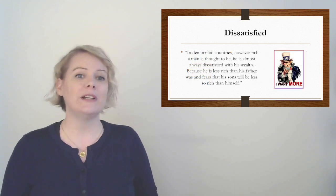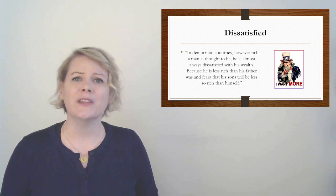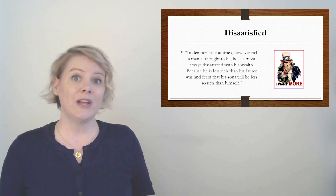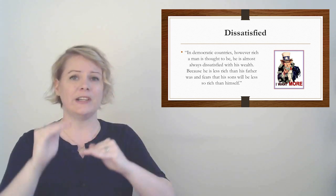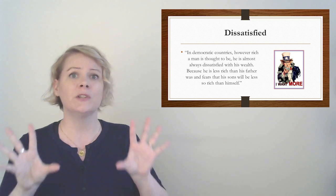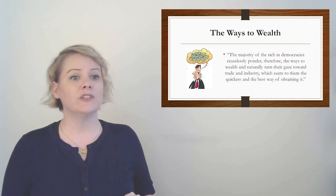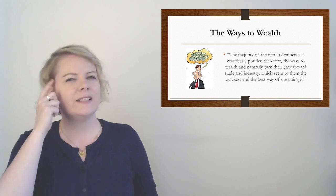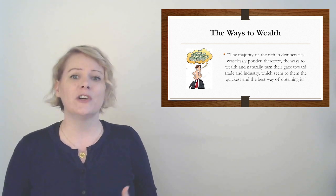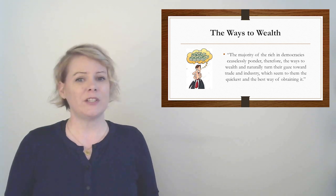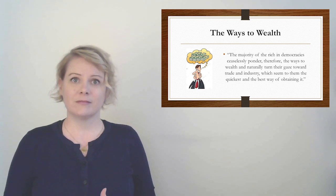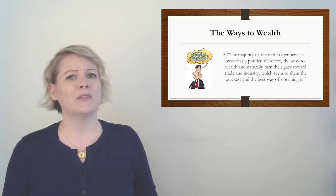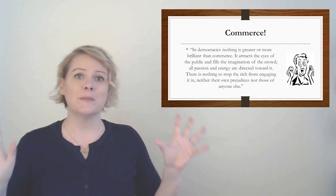The cultivation of the ground promises an almost certain result for his efforts, but a slow one. Gradual and laborious is the path to wealth. So farming works, but it's slow. You gotta plant stuff and then you gotta wait for it to grow and then you gotta harvest it. It takes a long time to really build up wealth if you're farming. So instead, his choice is made. He sells his field, leaves his house, and embarks upon some risky but profitable profession. So basically all the Americans are leaving the farm for the city. Democracy, therefore, does not simply multiply the numbers of workers. It leads men into one type of work rather than another. While it gives them a distaste for agriculture, it does direct them toward commerce and industry. So as we level out, we all want to make as much money as fast as possible. And the best way to do that is the Industrial Revolution. In democratic countries, however rich a man is thought to be, he is almost always dissatisfied with his wealth. Because he is less rich than his father was and fears his sons will be less rich than himself.